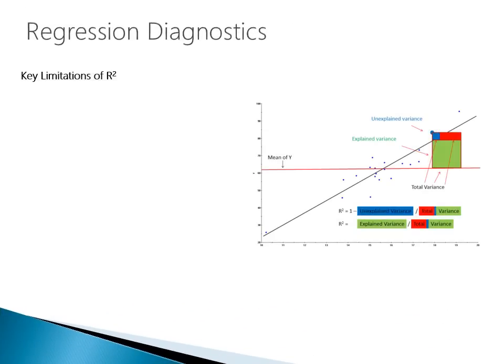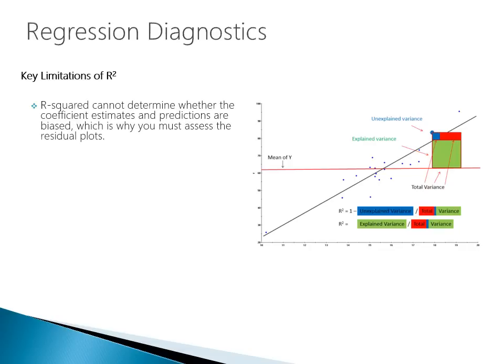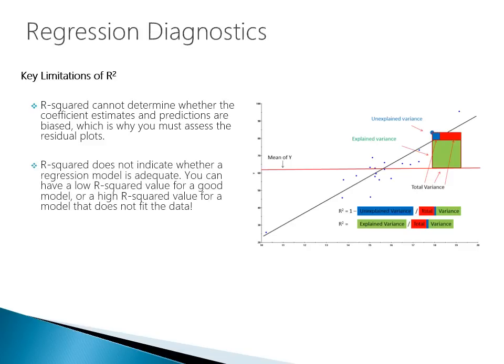There are key limitations of R-squared. R-squared cannot determine whether coefficient estimates and predictions are biased, which is why we must assess the residual plot. R-squared does not indicate whether a regression model is adequate — you can have a low R-squared for a good model, or a high R-squared for a model that does not fit the data. Additionally, the R-squared in your output is a biased estimate of the population R-squared.